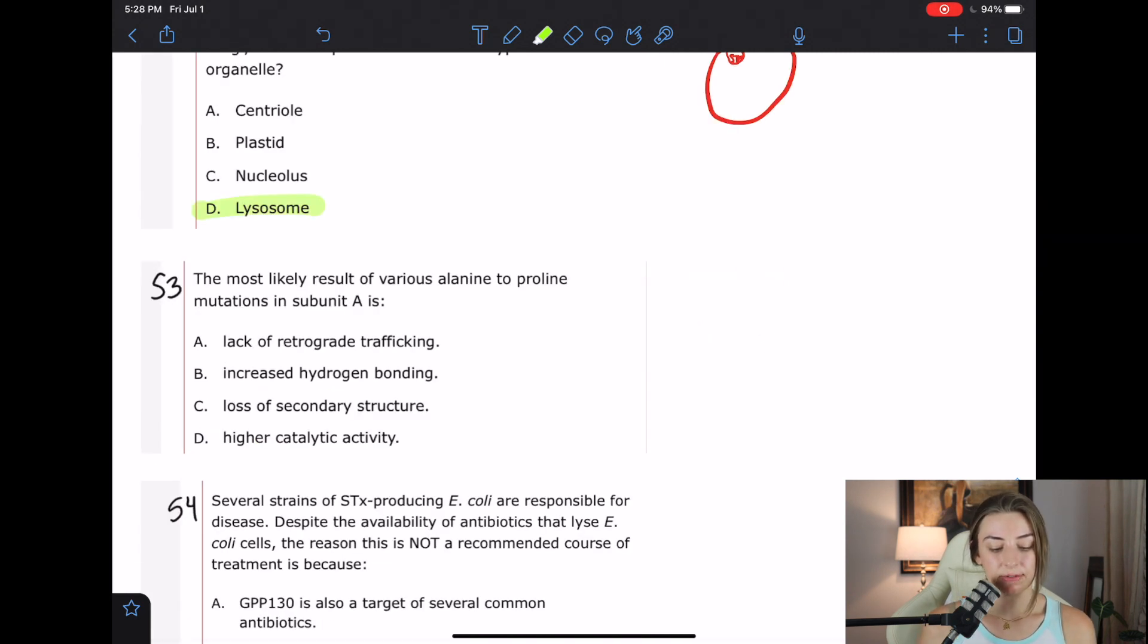Question 53, the most likely result of various alanine to proline mutations in subunit A is. So if I'm remembering correctly in the passage, we weren't told that these mutations actually happen. But I think that the question is basically asking, do you know the difference between alanine and proline and kind of how they play into the structure of a protein? A says a lack of retrograde trafficking. So that was subunit B. If you go back up in the passage, you can see that that was subunit B that helps with the retrograde trafficking. And here we're talking about subunit A. So I don't think that that would be the right answer.